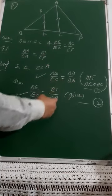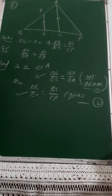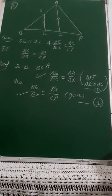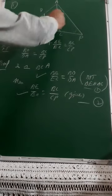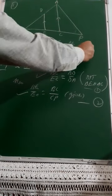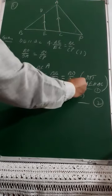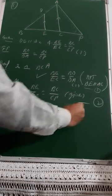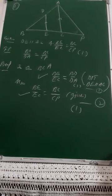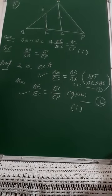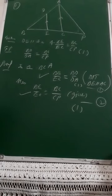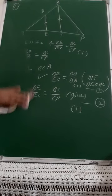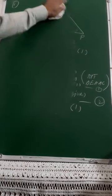From equations one and two, BD upon DA equals BC upon CP — hence proved. The marking scheme: one mark for given information and figure, one mark for equation one step, one mark for the answer step. This question carried three marks total.